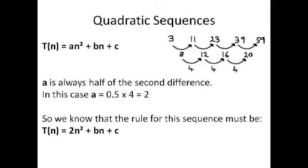We've got an example of a quadratic sequence in the right hand corner there and you can see that the second difference is 4. In our position to term rule, a is always half of the second difference, so in this case a is 2 because 4 times a half is 2. So we now know that the rule for this sequence must be 2n² plus bn, we don't know what b is yet, plus c.